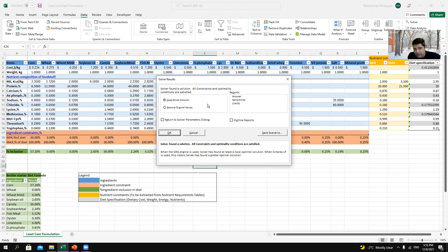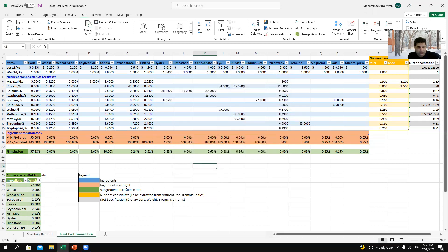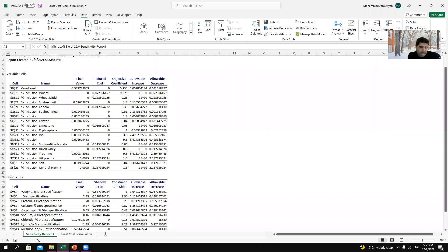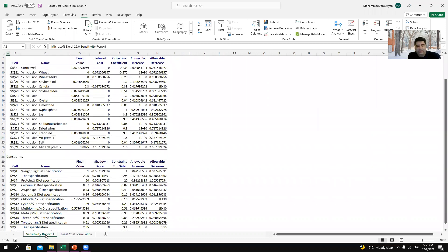Here in the solver results window, I can see solver found the solution which means that my diet was feasible. From reports section, you need to select sensitivity and just press OK. And here you can see a new sheet popped up which is sensitivity report and you can see your report.